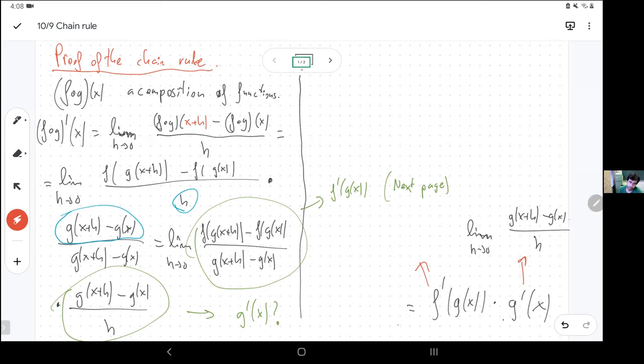This is g prime of x. That's just what it is. And I'm saying, well, g has to be differentiable. Otherwise, what am I doing? So that will make this limit exist.